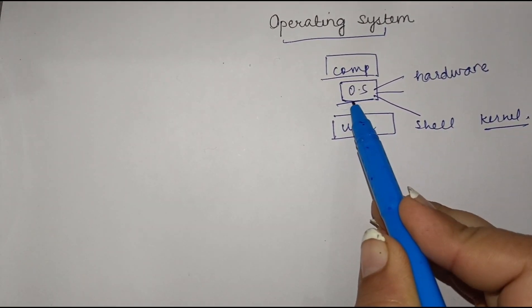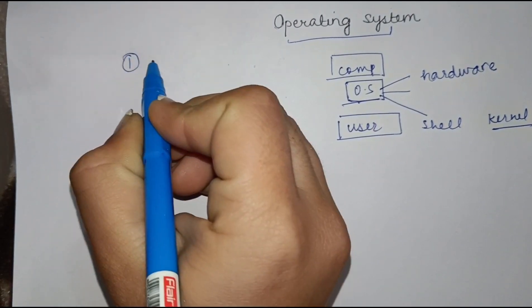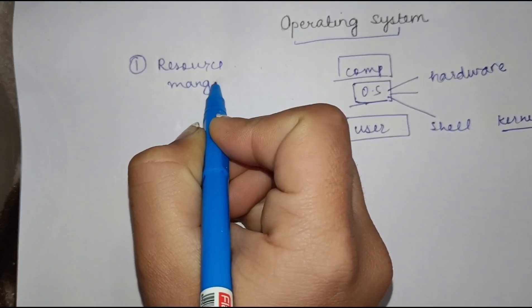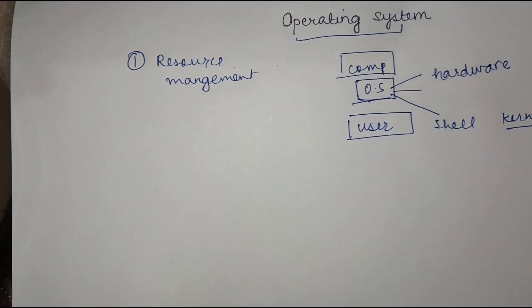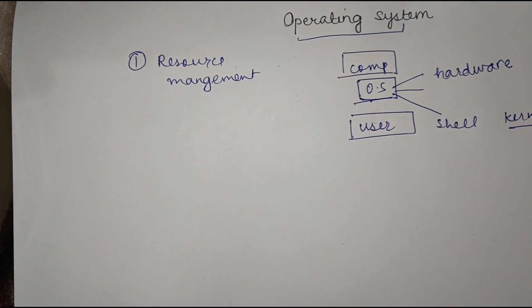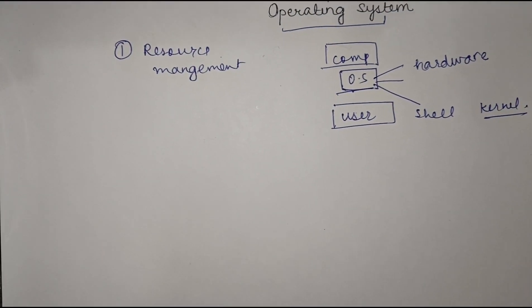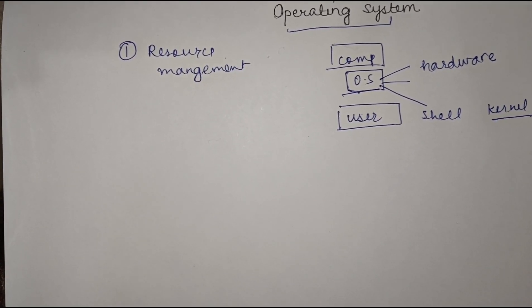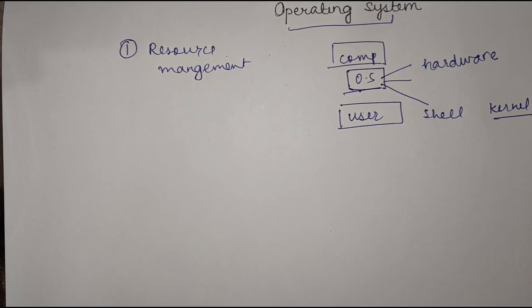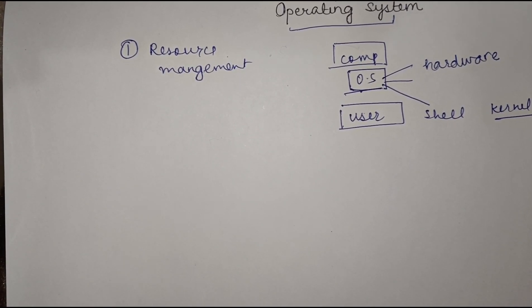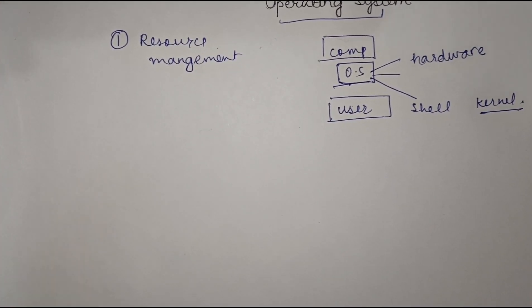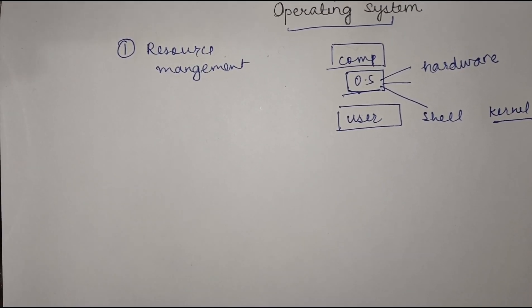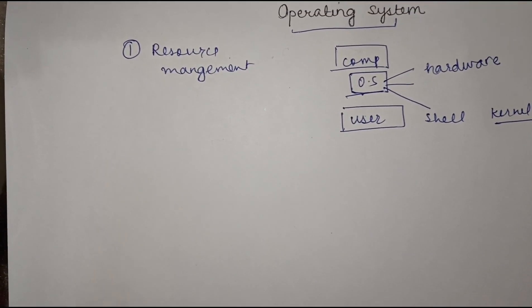The first function of the operating system is resource management. There are many processes that need to run on the computer, so it is the duty of the operating system to allocate various resources efficiently to each and every process. This is especially important in the case of multi-processing or parallel processing, where many processes need to perform tasks simultaneously, so the OS must manage resources very carefully.